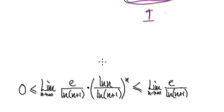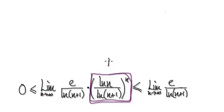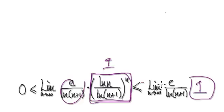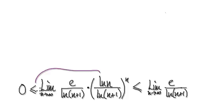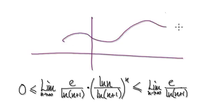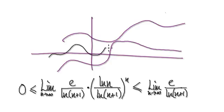So now you can say the biggest thing that this block could be is the number 1. So 1 times this thing here has to be bigger or equal to this thing that we're trying to investigate, and it has to be bigger than 0. So now we can apply the squeeze theorem. Remember the squeeze theorem? If you have a function that's always trapped in between two other functions, and the limit of those two functions heads towards the same place, then the middle function will have no choice but to have the same limit.